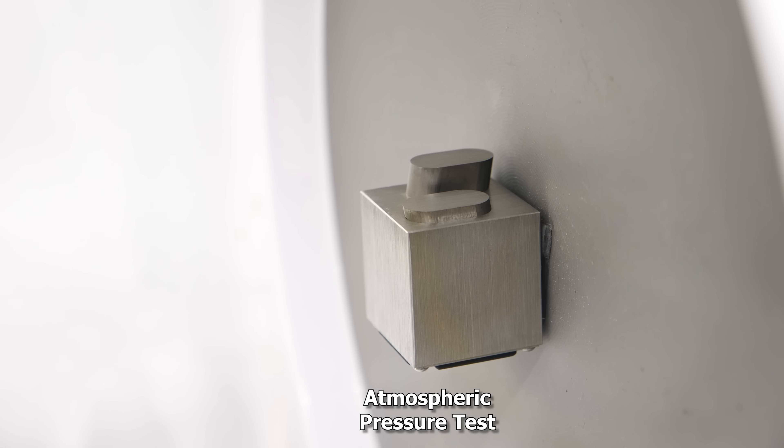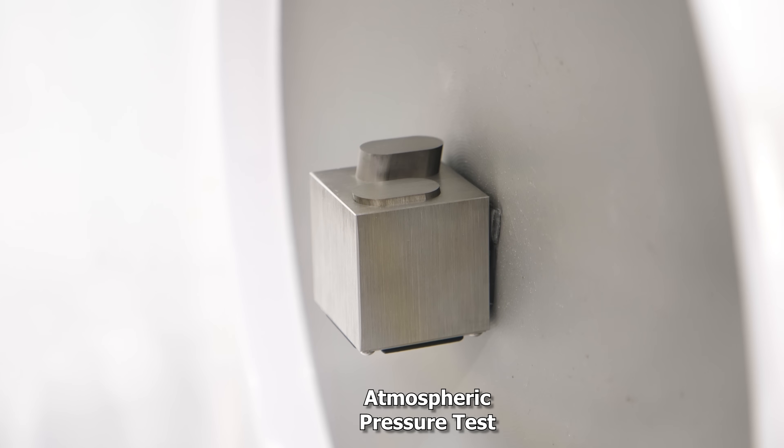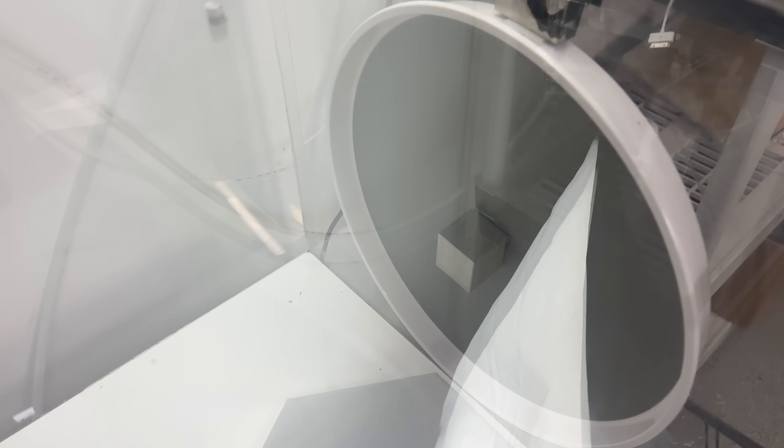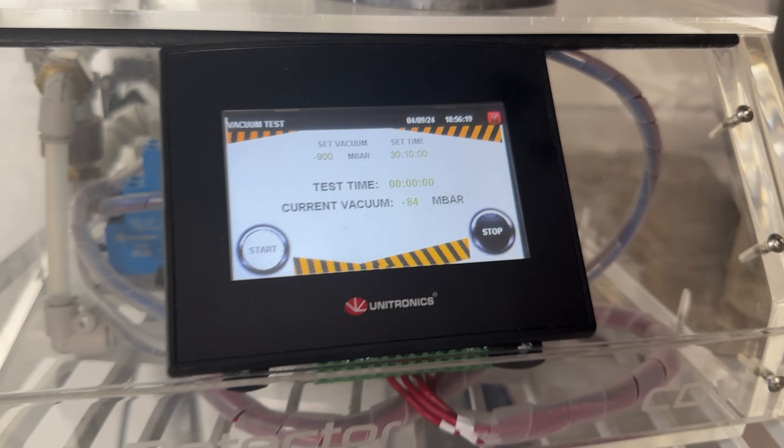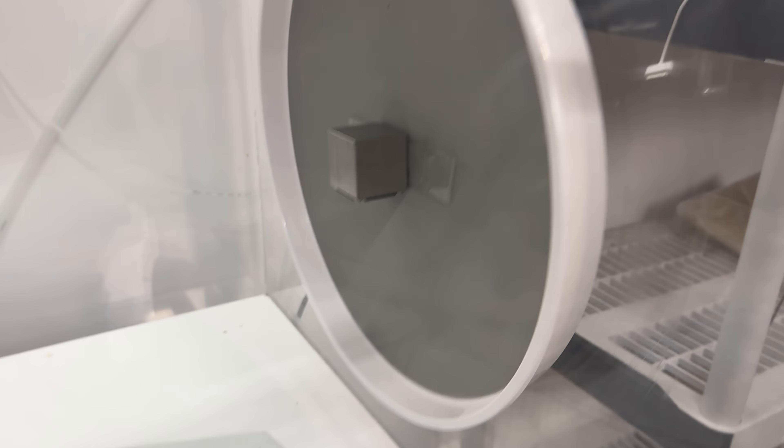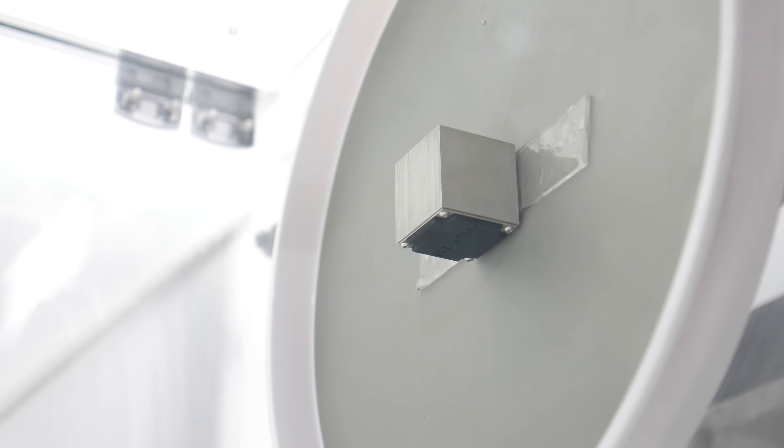But now let's drop the pressure in this big vacuum chamber. Okay, so now we're gonna close this up and see what happens when it's under vacuum. We're going to get to less than 0.05 atmospheres. So the air pressure is now 20 times less than normal atmospheric pressure. Okay, let's turn it upside down.